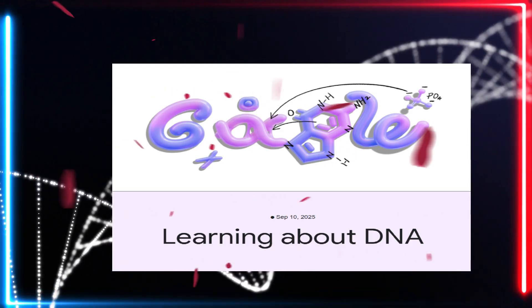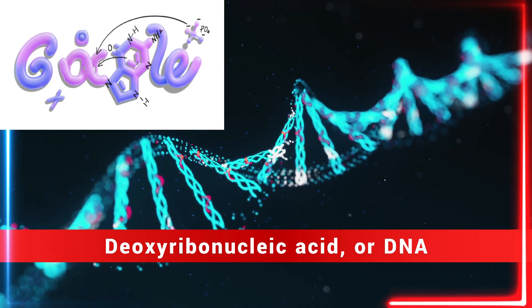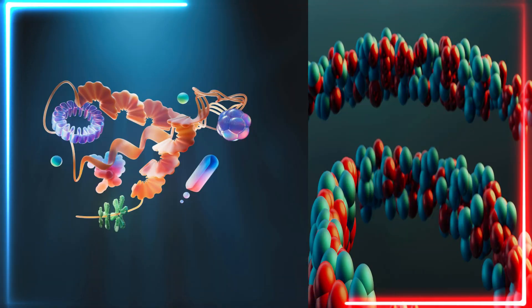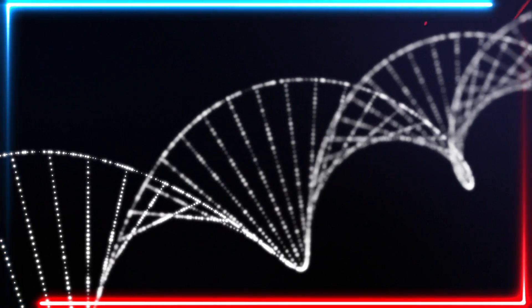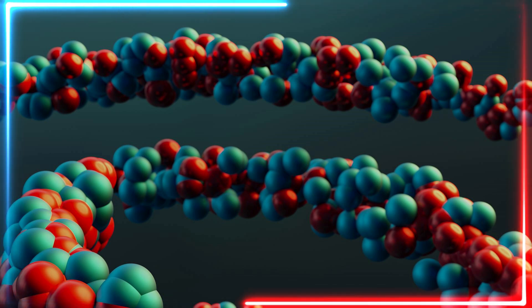This back-to-school Doodle dives into deoxyribonucleic acid, or DNA. It's a molecular polymer that carries the genetic instructions for growth, reproduction, and function for all living organisms. It consists of two chains that coil together to form a double helix. Put simply, it's the genetic code that makes each individual unique.